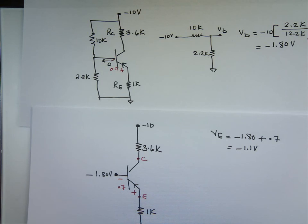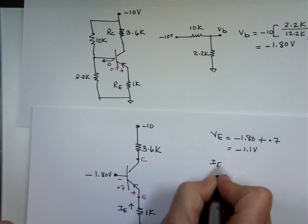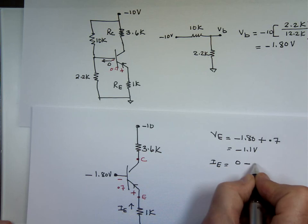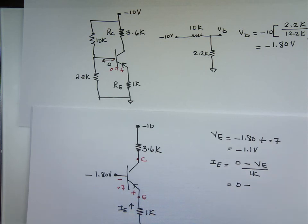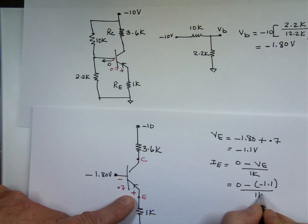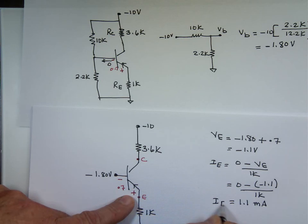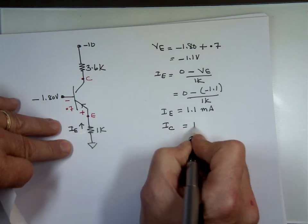If V_E is negative 1.1V, we can find I_E. Correction: I_E will be going in for a PNP, not out — force of habit. So I_E equals 0 minus V_E, divided by 1K, which is 0 minus negative 1.1 divided by 1K, giving us 1.1 milliamps. Since I_B is 0, I_C is also 1.1 milliamps.